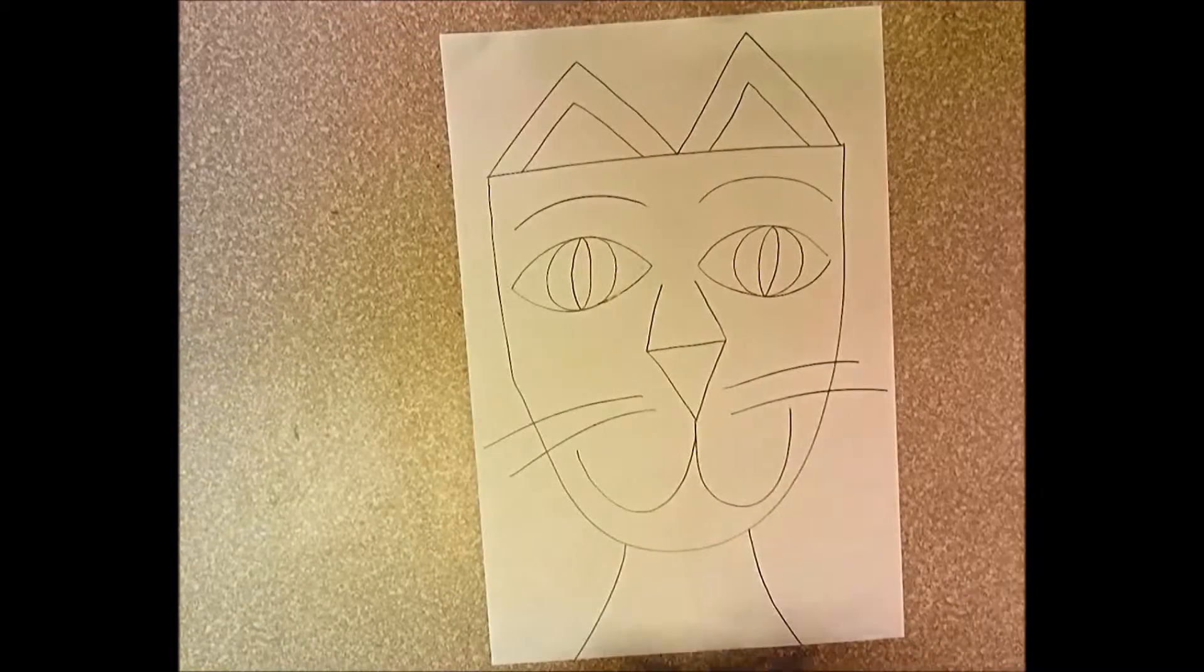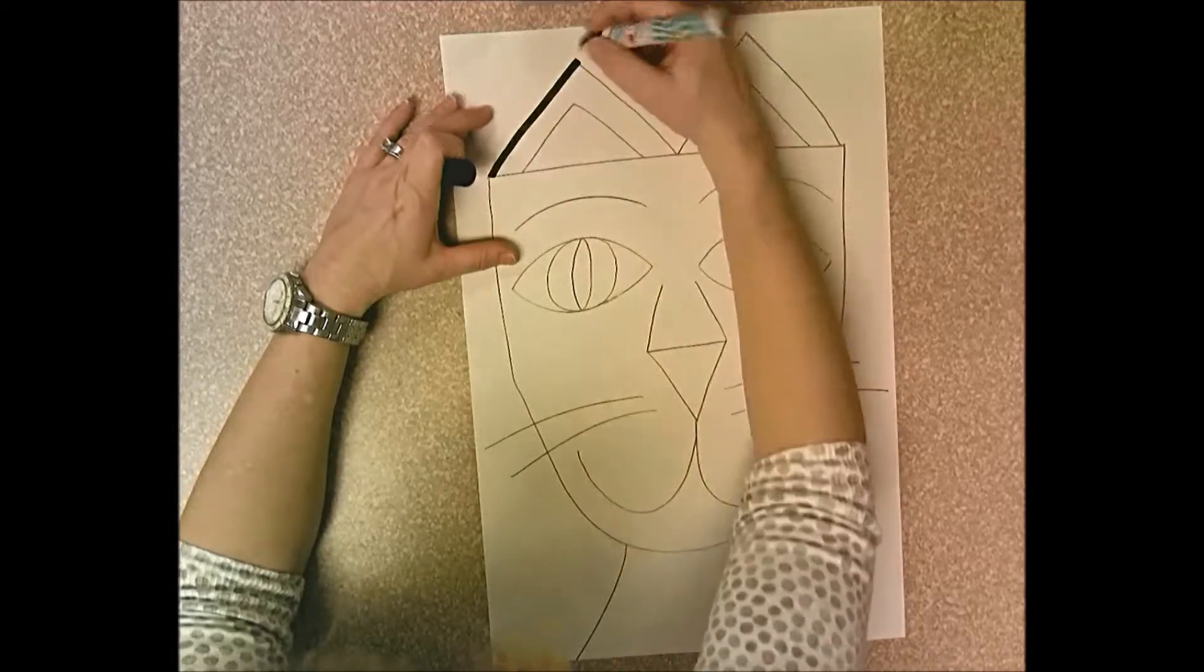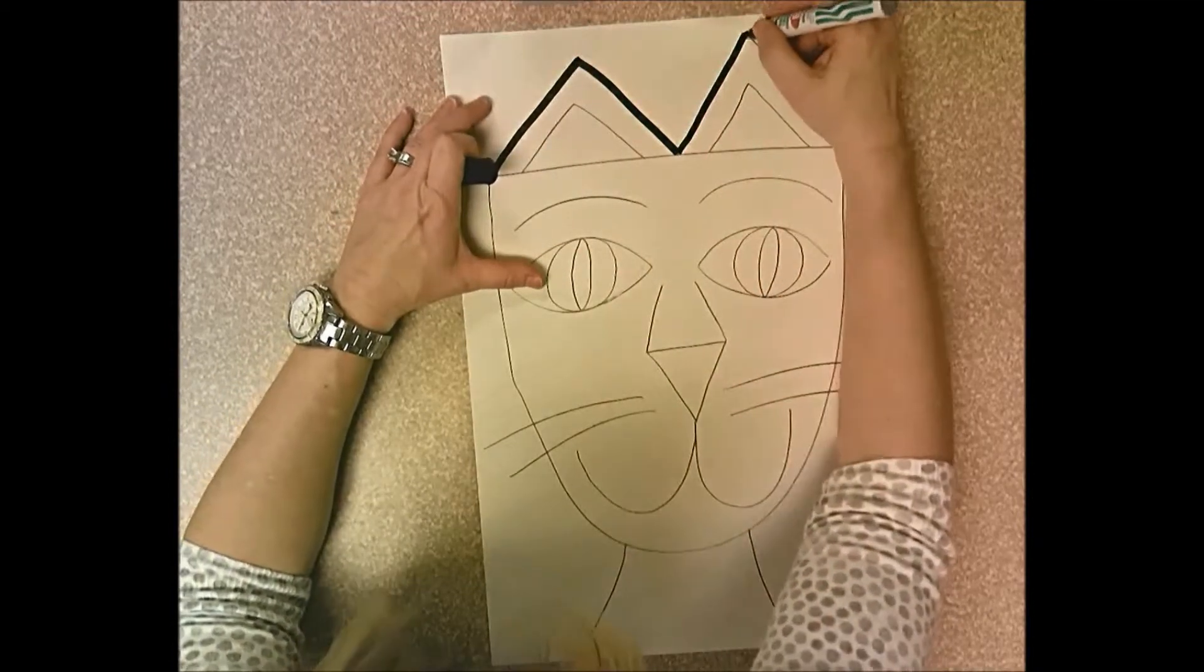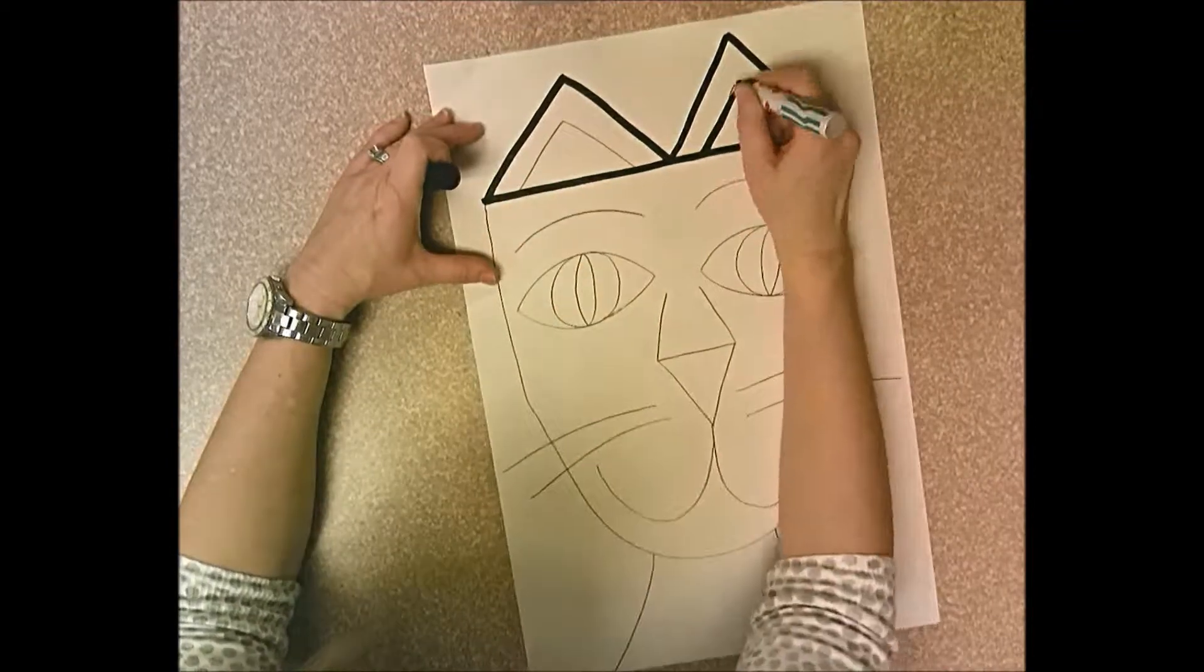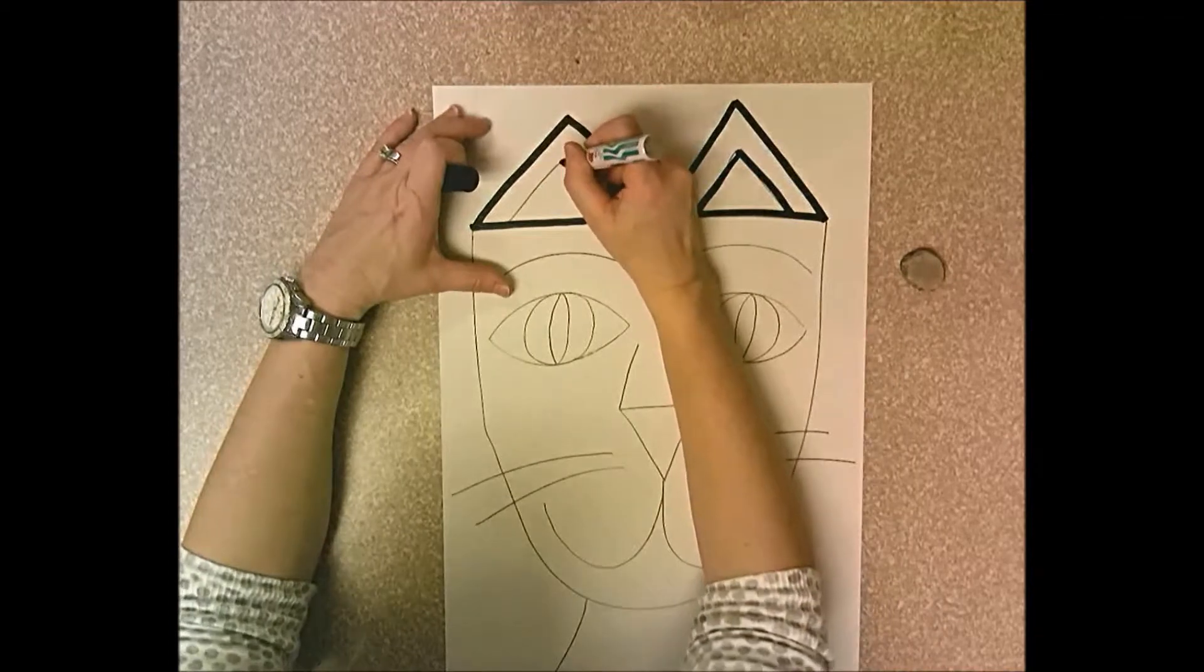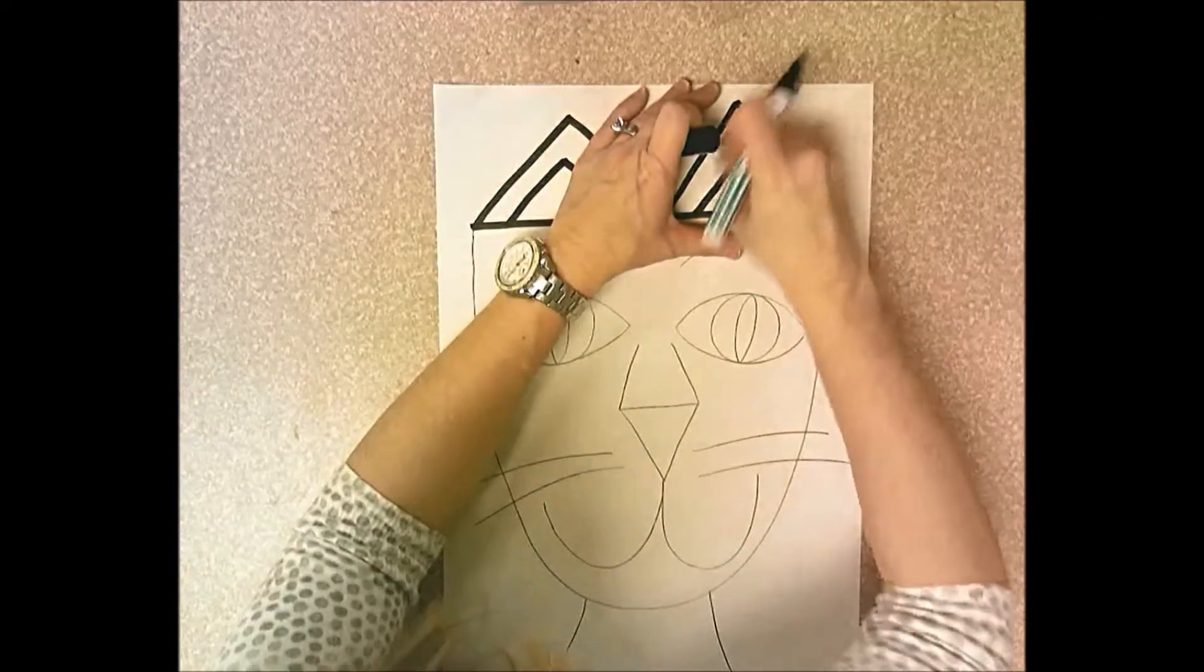Now you're going to outline with permanent marker. Trace your pencil lines very carefully, and any pencil lines you miss, so I missed a pencil line there, I'm going to give the marker a little time to dry there and then I'll go back and erase.